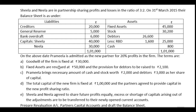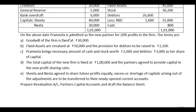The terms are: goodwill of the firm is fixed at Rs. 30,000. We do not have goodwill in the balance sheet, so now it is valued at Rs. 30,000. Fixed assets are valued at Rs. 50,000, and provision for debtors is to be raised to Rs. 2,100. Pramila, the new partner, brings a necessary amount of cash and stock worth Rs. 2,000 and debtors Rs. 3,000 as her share of capital.